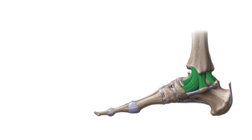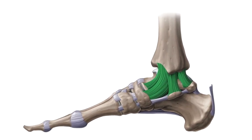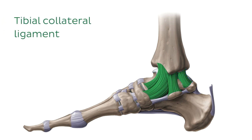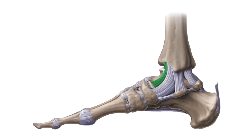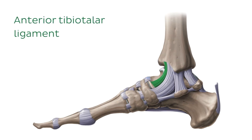We'll start on the medial or tibial side. In this image, there are four different ligaments highlighted. Collectively, these ligaments make up the tibial collateral ligament, also called the medial collateral ligament or deltoid ligament. The most anterior ligament, highlighted in green, runs from the anterior surface of the tibia to the talus.